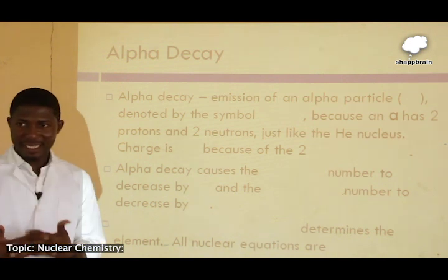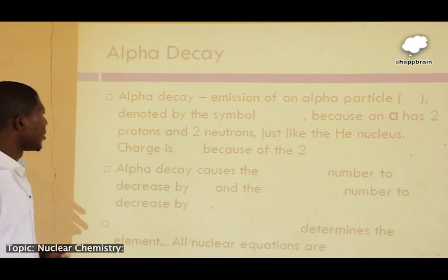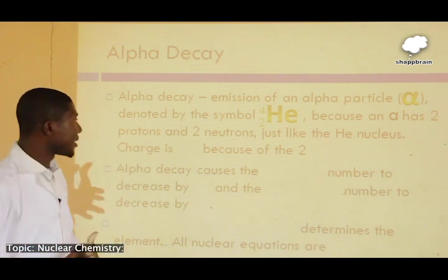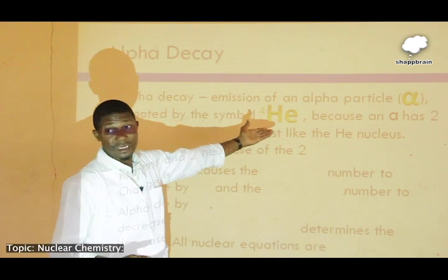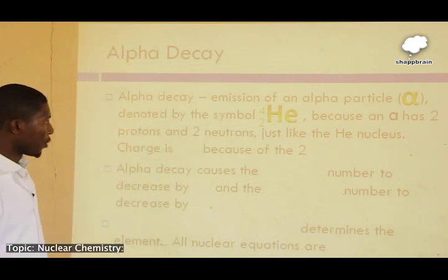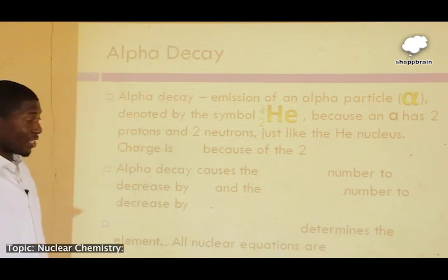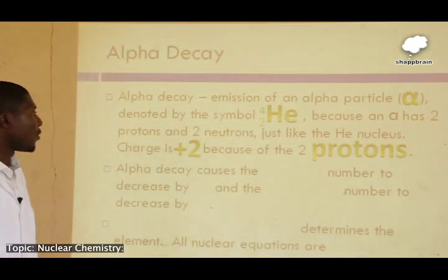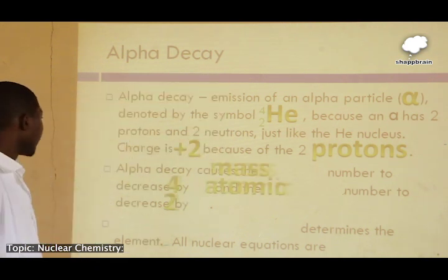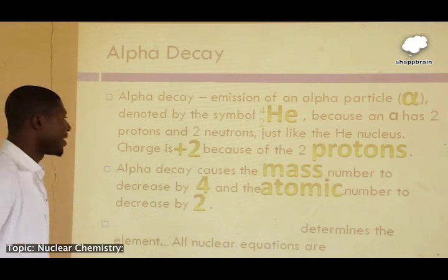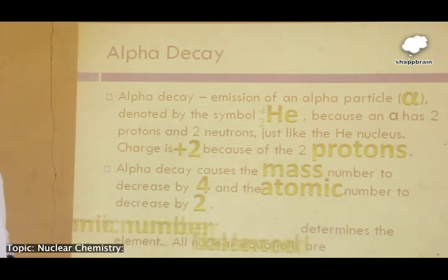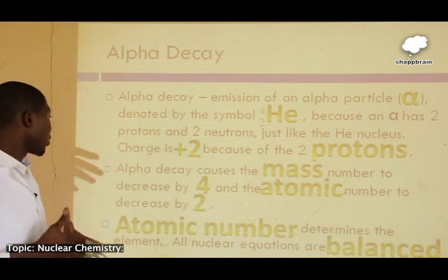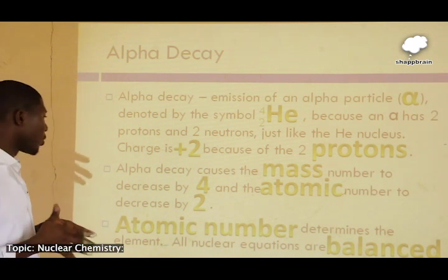Alpha decay is the emission of an alpha particle. An alpha particle is represented by the symbol He-4-2 — a helium nucleus with a mass number of 4 and charge of +2, because it has two protons and two neutrons. Alpha decay causes the mass number to decrease by 4 and the atomic number to decrease by 2. Note that atomic number determines the element, and all nuclear equations are balanced.